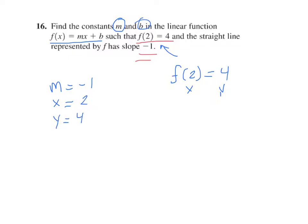And we'll be able to solve for b that way. So what we do is we say 4, which is our f of x value, or our y value, equals negative 1, which is m, times 2, which is x, plus b, which we don't know yet. So we're going to solve this equation, 4 equals negative 2, plus b.